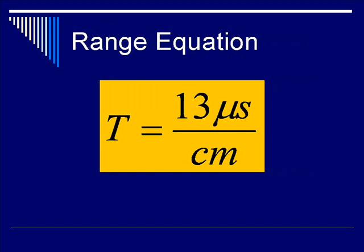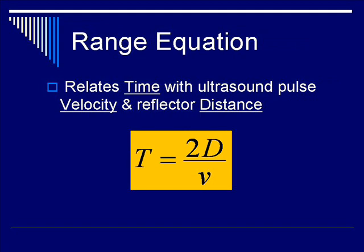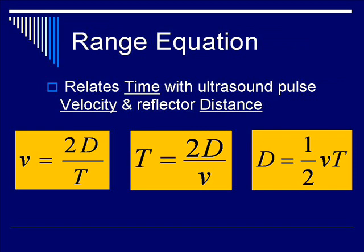Another equation often used is T equals 13 microseconds per centimeter depth. This is a shorthand because it also relates time with velocity and distance. There are many variations of this equation. You have T equals 2D over V. You can also find velocity as V equals 2D over T, or calculate distance D equals VT over 2 if you know the velocity of the ultrasound pulse and the round trip time.